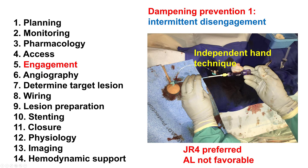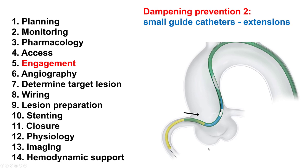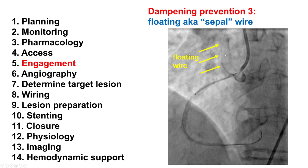In terms of guide catheters, AMBLADs are not preferred for right coronary artery osteal lesions because they are harder to manipulate, whereas GR4 are usually preferred. Another option to prevent dampening is to use small guide catheters or guide catheter extensions. A third option is to use a wire placed into the aorta, which marks the location of the ostium and facilitates stent placement, and also helps keep the guide outside of the ostium of the coronary artery. This wire is called floating, or sometimes a sepal wire.